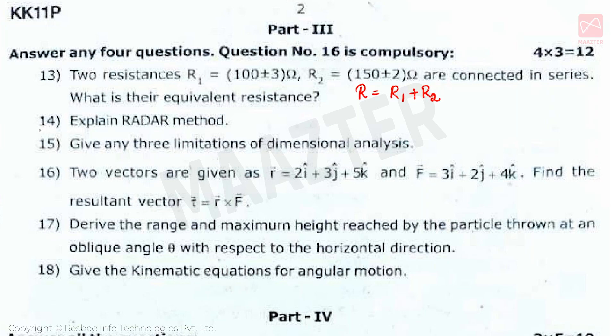Next question is: Explain radar method. Radar means radio detection and ranging. The radar method is used to measure the distance of a mass on Earth. Next: Give any 3 limitations of dimensional analysis. 5 limitations are given, from which you must write 3 points.